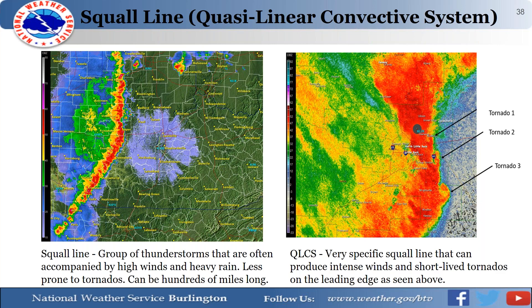A quasi-linear convective system (QLCS) is a specific type of squall line that produces both intense winds and short-lived tornadoes. Instead of unidirectional shear, a QLCS has a veering wind profile — for example, southerly winds at the surface but west-to-northwest winds aloft. This directional change creates rotation — what we call shear — and when you have enough shear with instability and forcing, these are the ingredients for tornado genesis. This is the type of storm Matthew experienced in Little Rock.